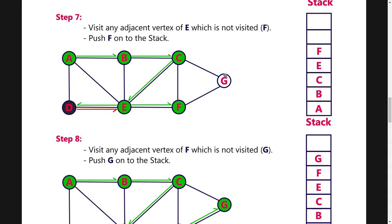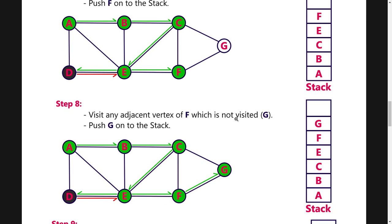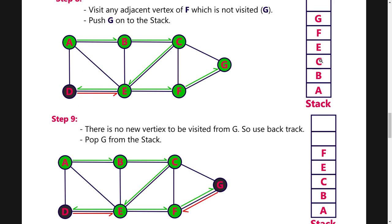So once you go to G, then there is no unvisited node for G, so you have to do the backtrack. So you have to pop G. Once you pop G, I am mentioning it in the black color. Once you pop, then there is F. You have to go to F.